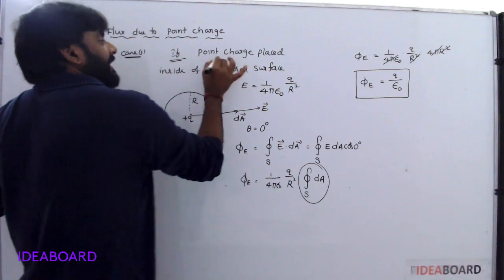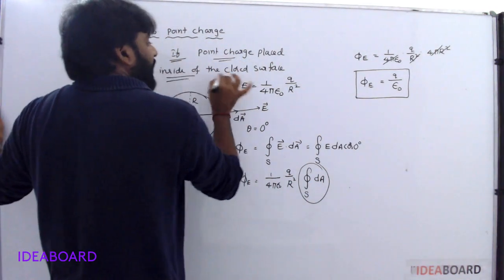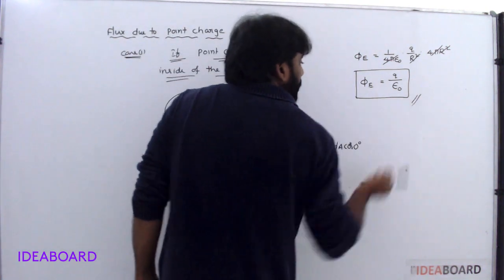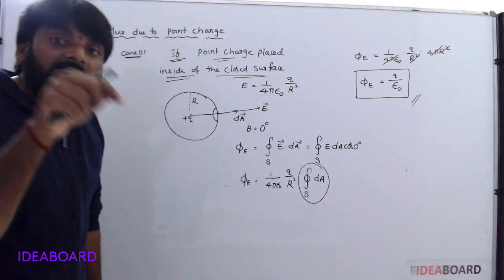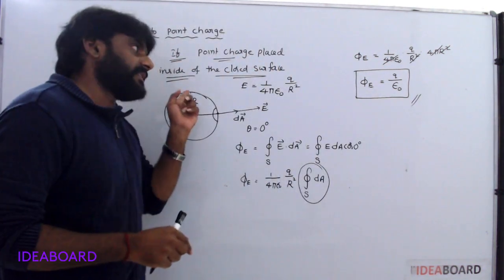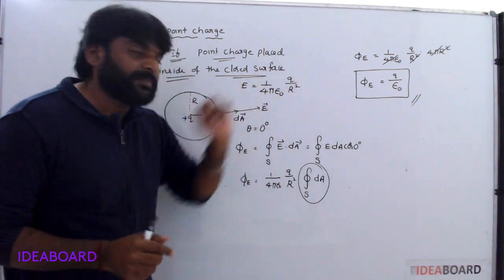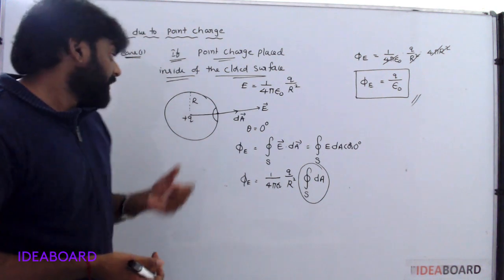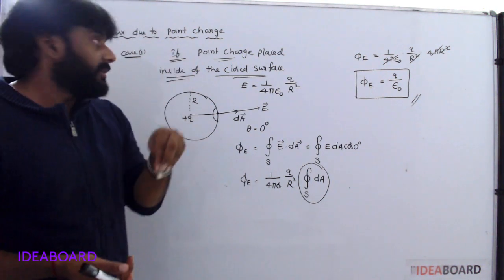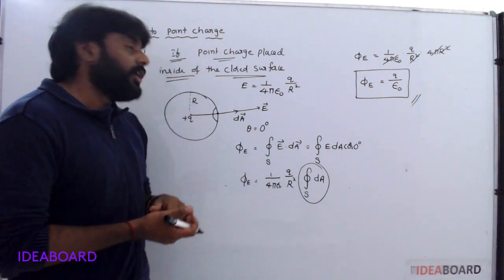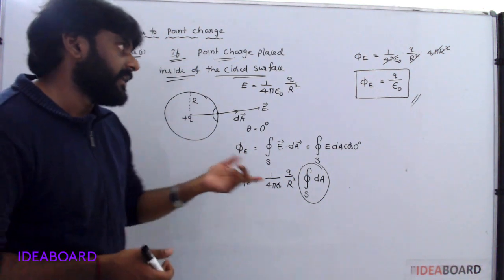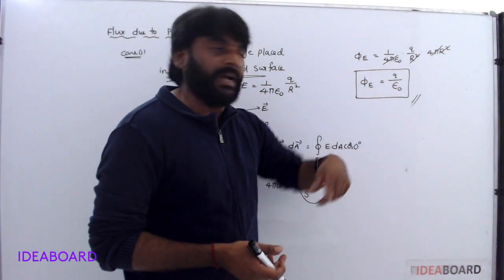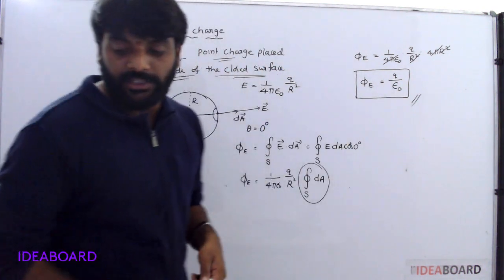So if the point charge is placed inside of the closed surface, the developed flux is equal to the charge inside the surface divided by epsilon naught, where epsilon naught is the permittivity of free space. If the point charge is placed inside of the closed surface, flux equals charge inside the surface divided by epsilon naught.